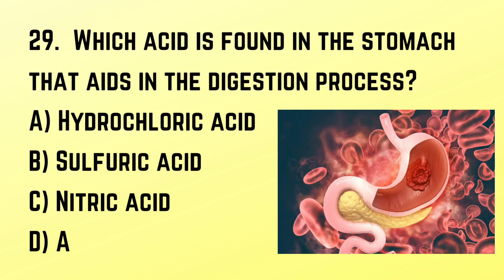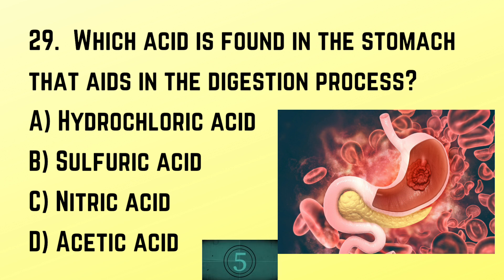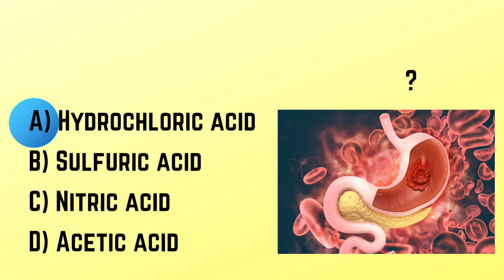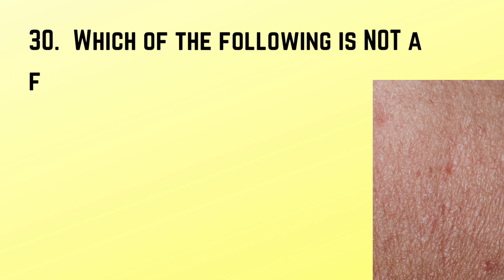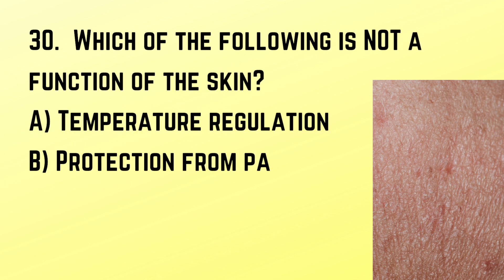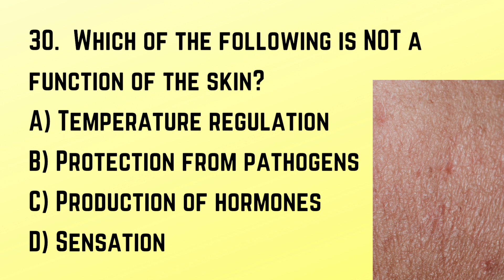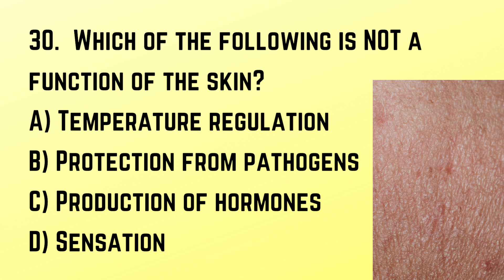Question number 29: Which acid is found in the stomach that aids in the digestion process? Correct answer: A. Hydrochloric acid. Question number 30: Correct answer: C. Production of hormones.